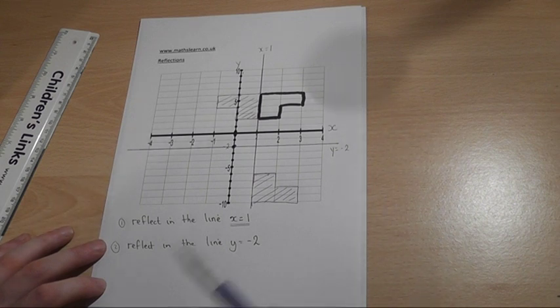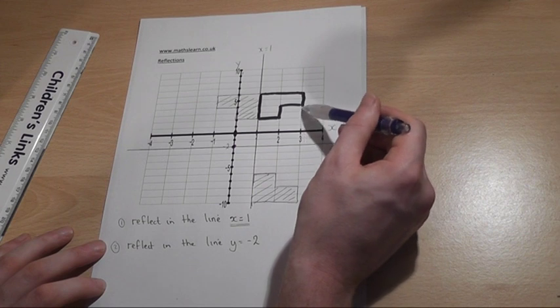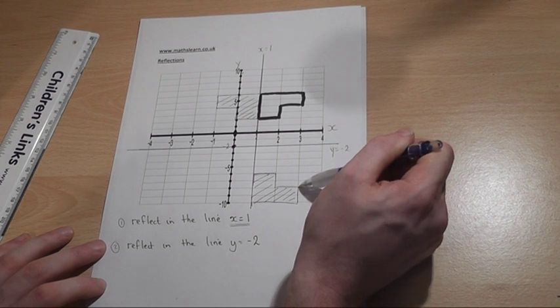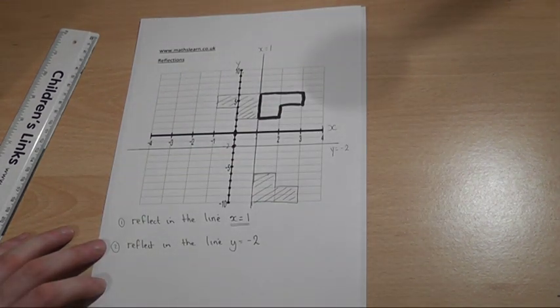Just to check a few coordinates. This was 1, 2, 3, 4, 5, 6 from the mirror line. 1, 2, 3, 4, 5, 6. We've kept the same distance for corresponding points.